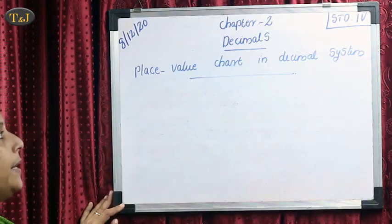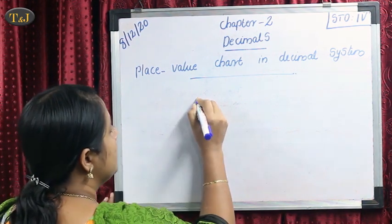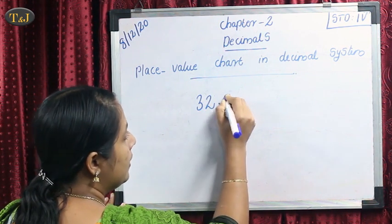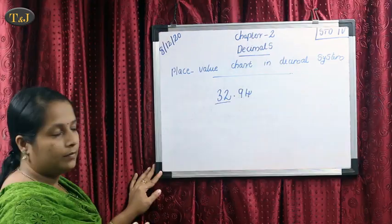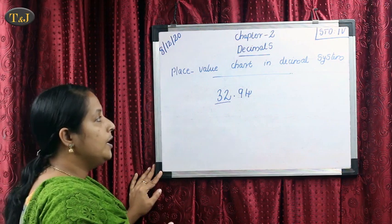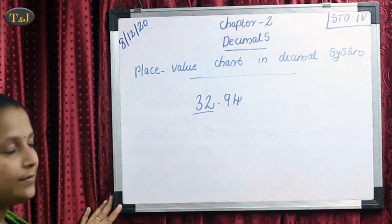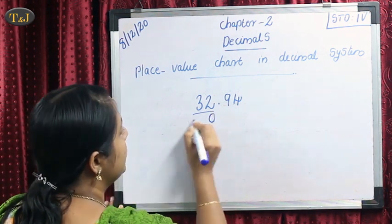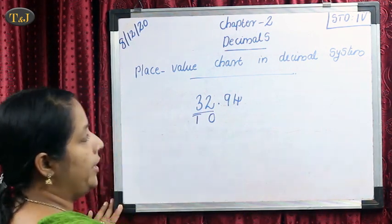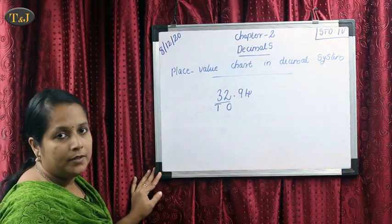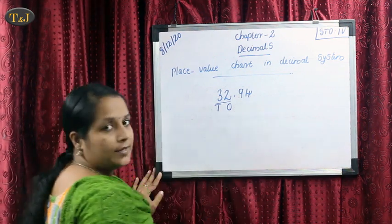Our next heading is place value chart in the decimal system. I will explain how we can find out the place value. Suppose the number 32.94. The whole part is 32. The place values are: 2 is in the 1's place and 3 is in the 10's place — we already learned this in our previous classes. After the point, how do we find the place values?